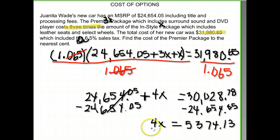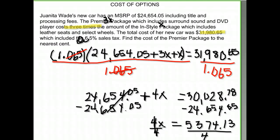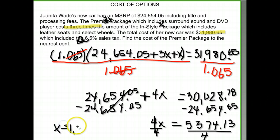Now all we have to do is divide both sides by four to find X. Taking five thousand three hundred seventy four dollars and thirteen cents and dividing by four gives us X equals one thousand three hundred and forty three dollars and fifty three cents.